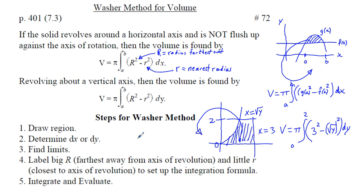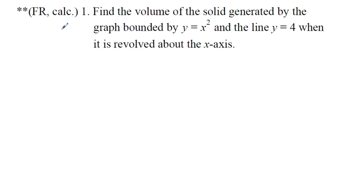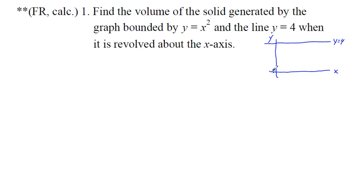Let's get to problem number one, a free response calculator problem from an actual AP test. Find the volume of the solid generated by the graph bounded by y equals x squared and the line y equals 4, revolved about the x-axis. We draw an xy coordinate plane with y equals 4 as a horizontal line and y equals x squared as a parabola, and we revolve the area between them about the x-axis.